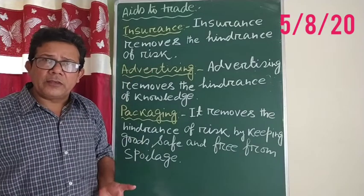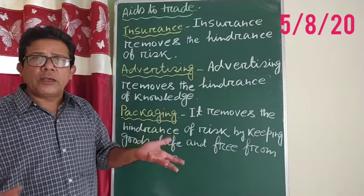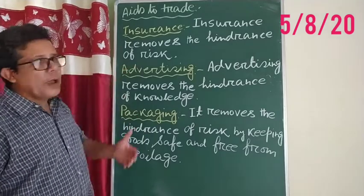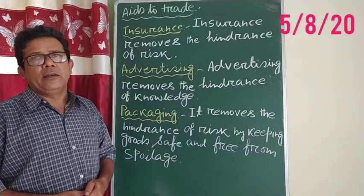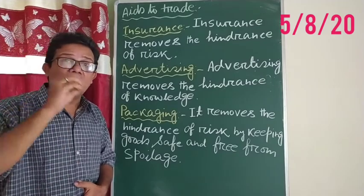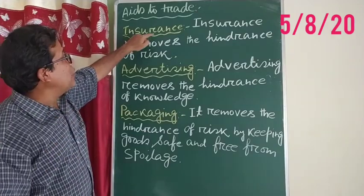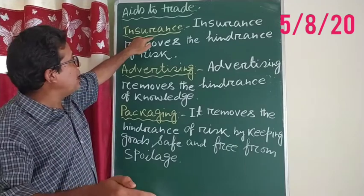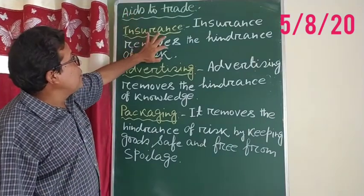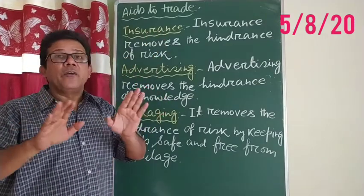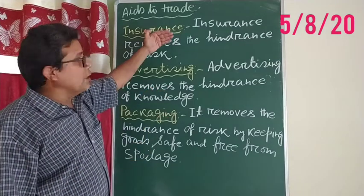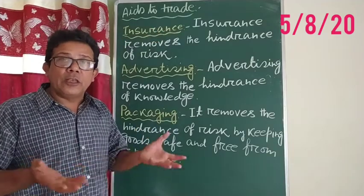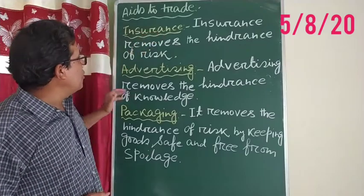Some problem may take place — your farm, your house, or business place may be burned. You will not be able to stand in your life again. So the risk is always there. Insurance is removing the hindrance of risk. If you have insurance and something goes wrong, you are going to get back your money or the things. That is why insurance is also an Aid to Trade.